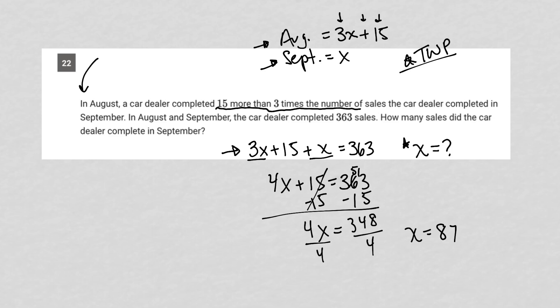X is 87. Therefore, there are 87 sales in the month of September, and our answer is 87.